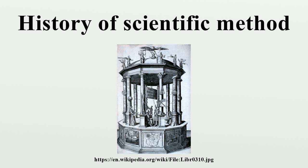Leucippus went on to develop the theory of atomism — the idea that everything is composed entirely of various imperishable, indivisible elements called atoms — which was elaborated in great detail by Democritus. Similar atomist ideas emerged independently among ancient Indian philosophers of the Nyaya, Vaisheshika, and Buddhist schools. In particular, the Charvaka epistemology was also materialist and sceptical enough to admit only perception as the basis for unconditionally true knowledge, while cautioning that if one could only infer a truth, then one must also harbour a doubt about that truth — an inferred truth could not be unconditional.